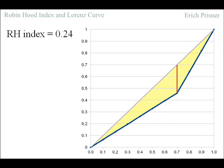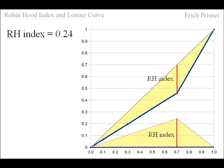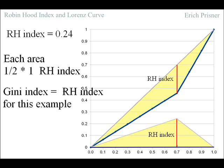The smallest area is obtained for such a triangular shape. This triangle has the same area as this area. And this triangle area has a base length of 1 and the Robin Hood index as height. Therefore the triangle has an area of 1 half times Robin Hood index. So the Gini index equals the Robin Hood index here.